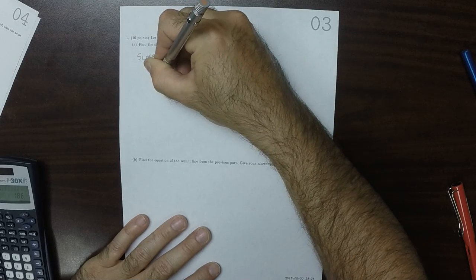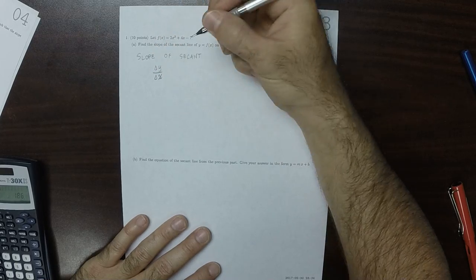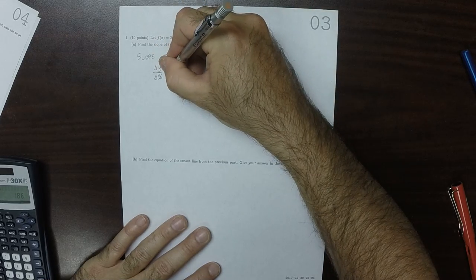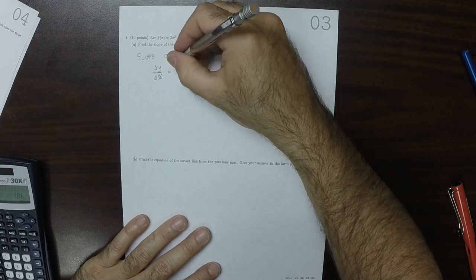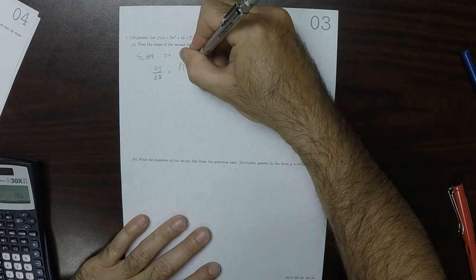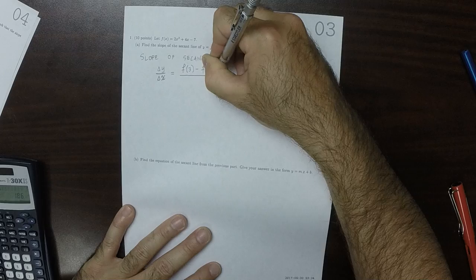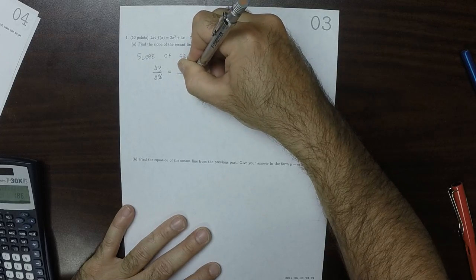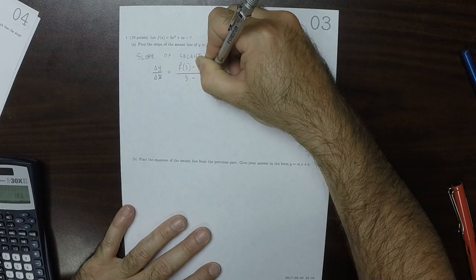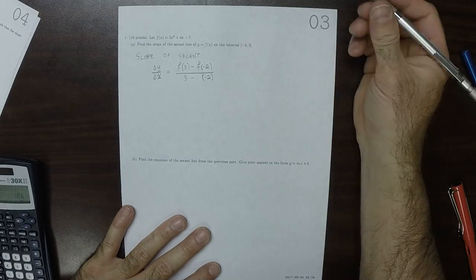is delta y over delta x, which is f of 3 minus f of negative 2 divided by 3 minus negative 2, because that's the change in y divided by the change in x.